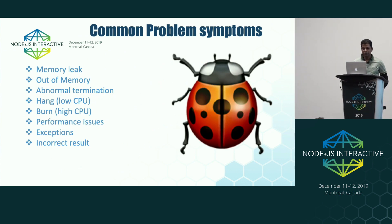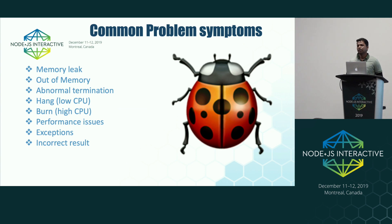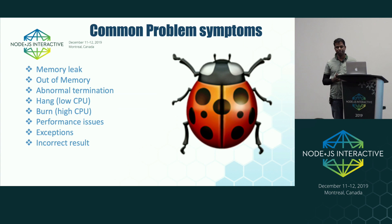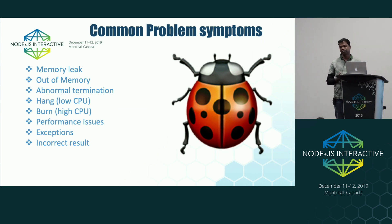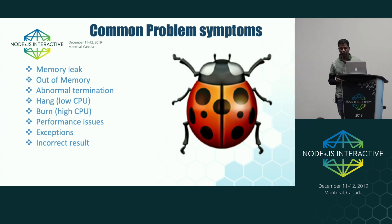The most common problem symptoms observed in Node.js production deployments: number one, memory leak. Memory leak is basically a mismatch in expectation between the program and the garbage collector. The garbage collector's contract is: if you have an object with a strong reference in the application, it won't collect it; if the object is not in scope or has no strong reference, it will collect it at the very next opportunity.